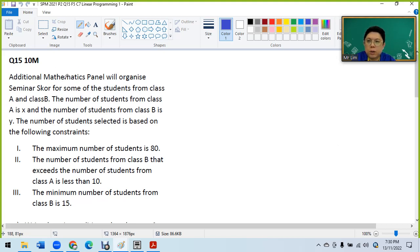Additional Mathematics Panel will organize seminar for some of the students from class A and class B. The number of students from class A is X and the number of students from class B is Y. The number of students selected is based on the following constraints.